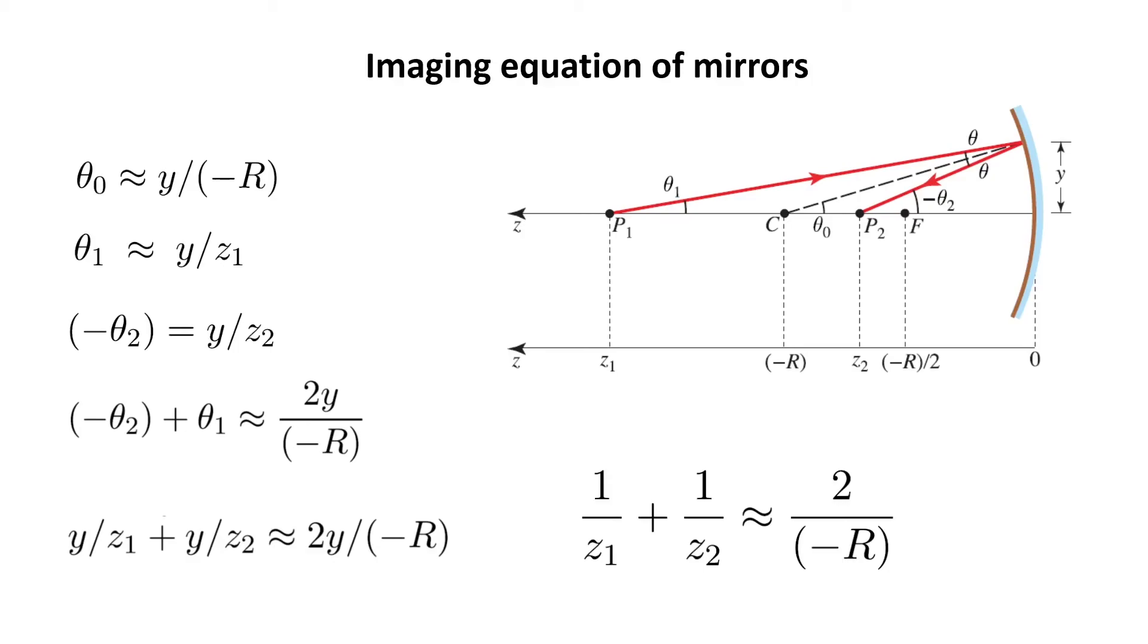Here, z1 is the distance between the mirror and the source. The point source here is P1. And z2 is the distance between the mirror and the image point, which is P2 here. And R is the radius of curvature.